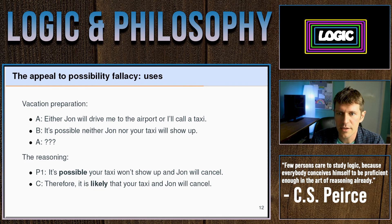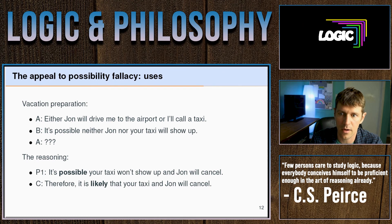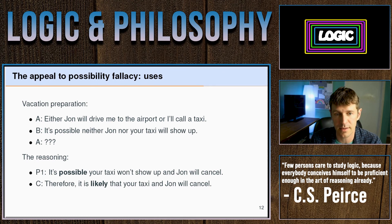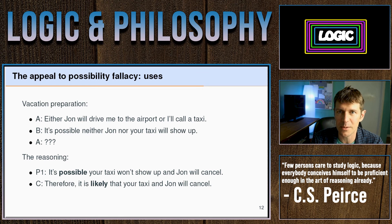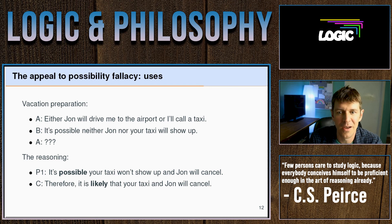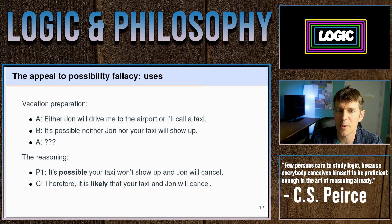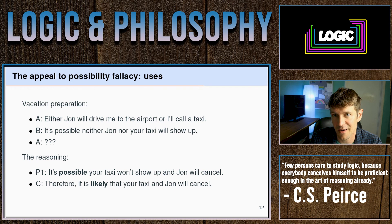Here's another example. You're preparing for a vacation and need to get to the airport. You say, 'My friend John is going to take me, and if John can't come through, I'll call a taxi or Uber.' A friend says, 'It's possible that neither John nor the taxi will show up.' This is certainly possible, but your friend is inviting you to conclude it's likely that neither will show up, so you should arrange extra precautions. The reasoning: it's possible your taxi and John will cancel, therefore it's likely they'll cancel, therefore you should find a third way to get to the airport.